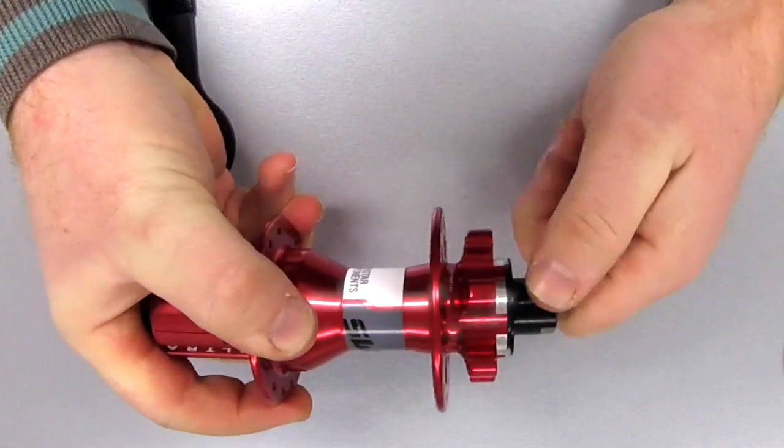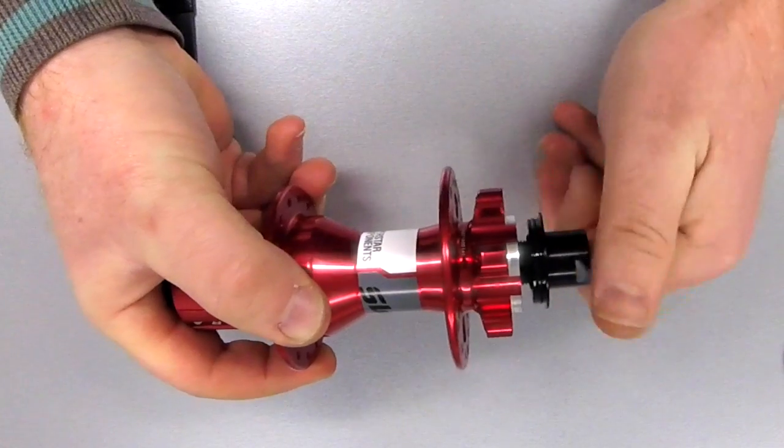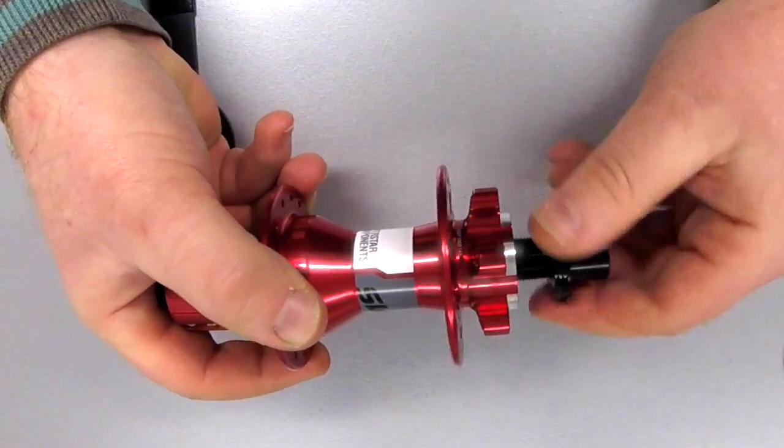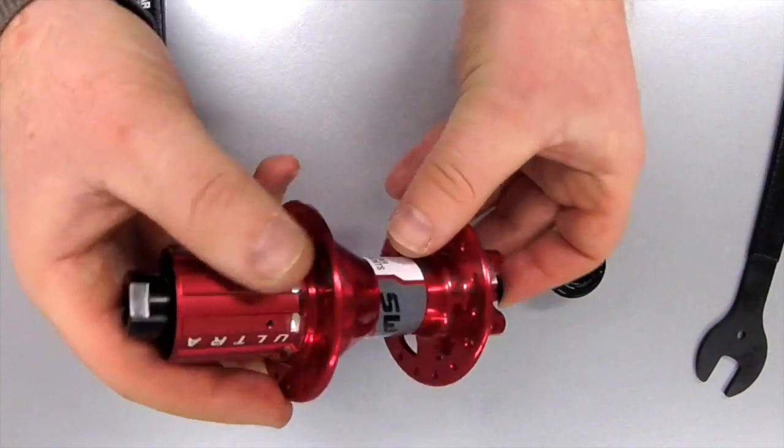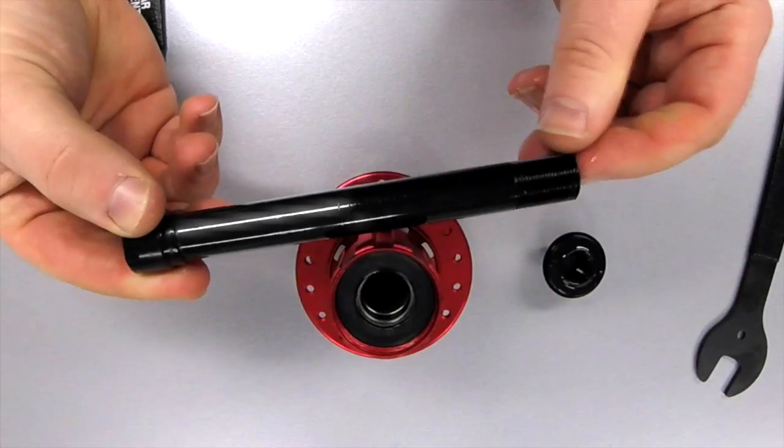Now wind off the end nut which is on the end of the hub on the disc side. Place this to one side and you can slide out the axle from the body.